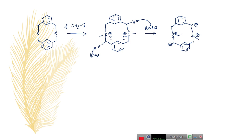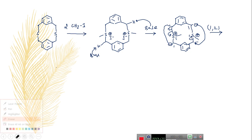Now this ylide undergoes rearrangement — specifically a 1,2 rearrangement — which gives you a sulfide.